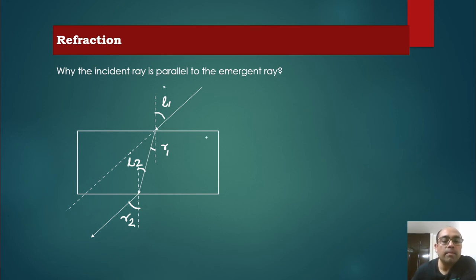Suppose this is a slab and the medium is 2 and this is medium 1 and it is coming out at medium 1 only.